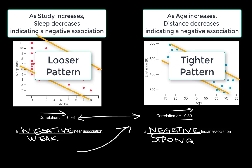We're seeing it in the scatter plot and in the correlation coefficient. When you compare scatter plots, the looser the pattern, the weaker the relationship; the tighter the pattern, the stronger the relationship.